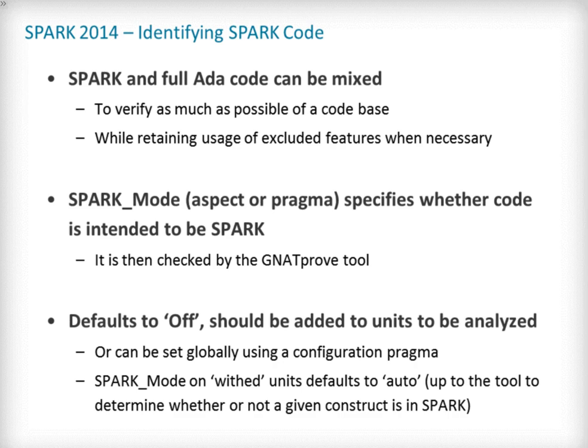The Spark language has been restricted to only allow easily specifiable and verifiable constructs. However, sometimes a user cannot or does not want to abide by these limitations on all of their codebase. Therefore, the Spark tools only check conformance to the Spark subset on code which is identified as being in Spark. This can be done using an aspect named Spark_Mode. If not explicitly specified, Spark mode is off, which means the code is in full ADA. To allow easy reuse of existing ADA libraries, entities declared in with-units with no explicit Spark mode can still be used from Spark code.